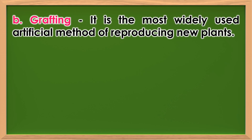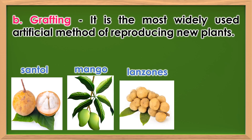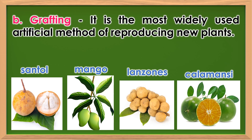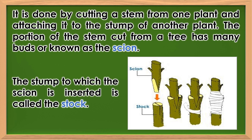Grafting: It is the most widely used artificial method of reproducing new plants. Santol, mango, lanzones, and calamansi are propagated through this method. It is done by cutting a stem from one plant and attaching it to the stump of another plant. The portion of the stem cut from a tree, which has mainly buds, is known as the scion. The stump to which the scion is inserted is called the rootstock.